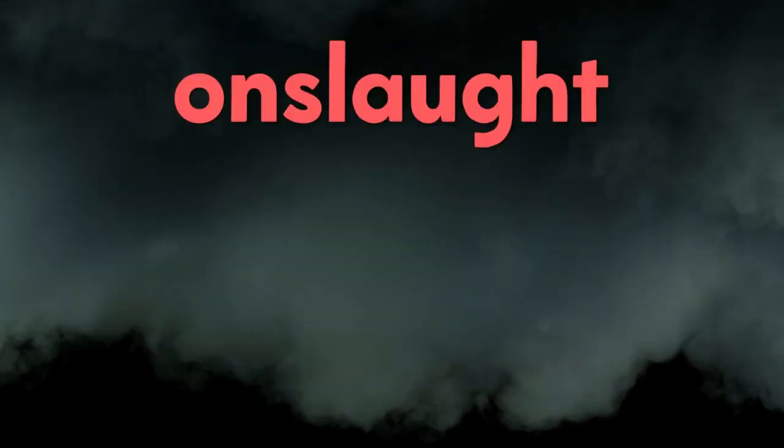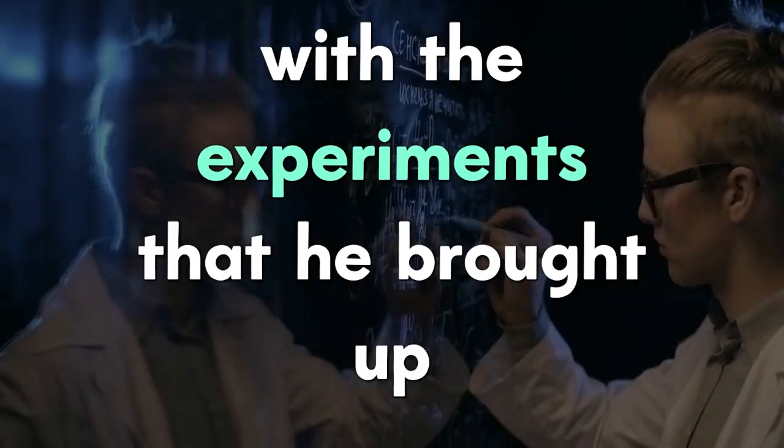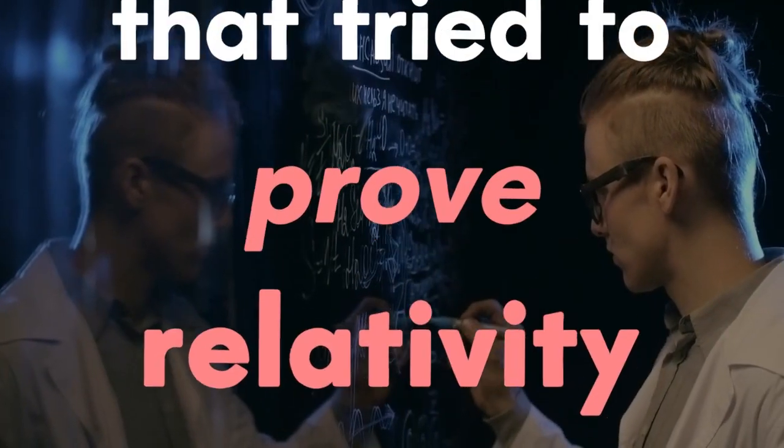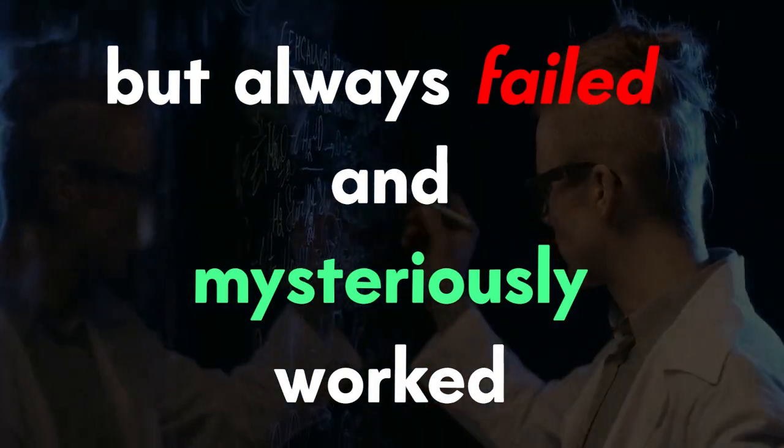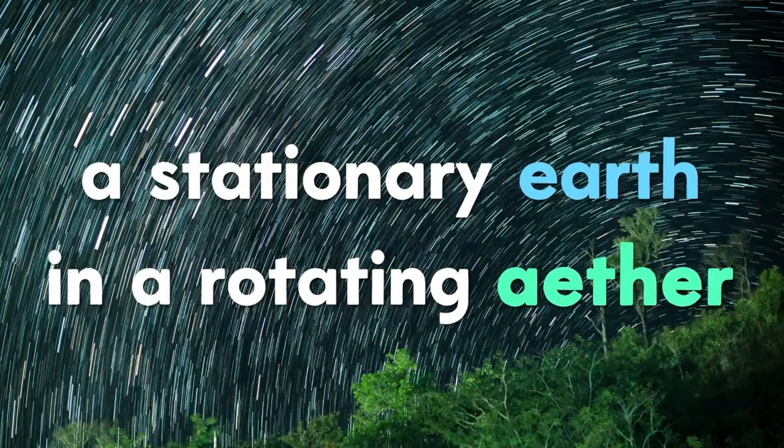When you think about what Robert Bennett was talking about on the show - his onslaught on relativity with the experiments that he brought up that tried to prove relativity but always failed and mysteriously worked when you accounted for stationary earth and a rotating ether - all the measurements would always come back to it.